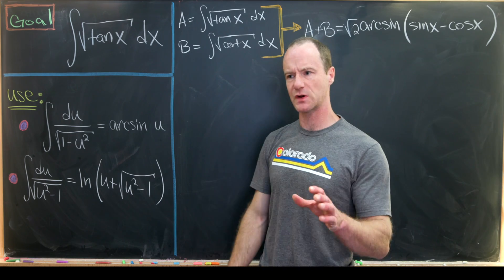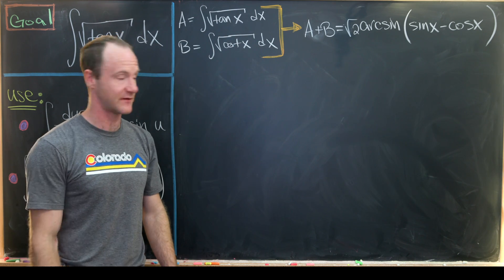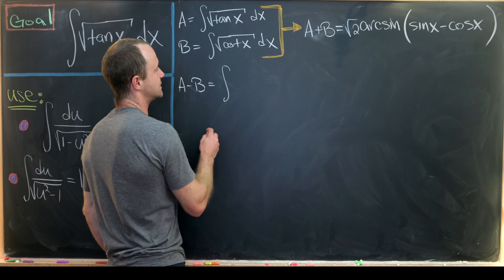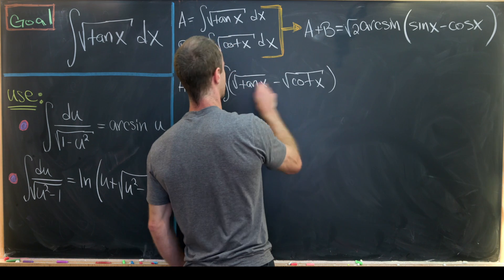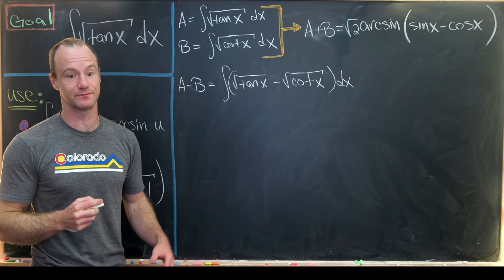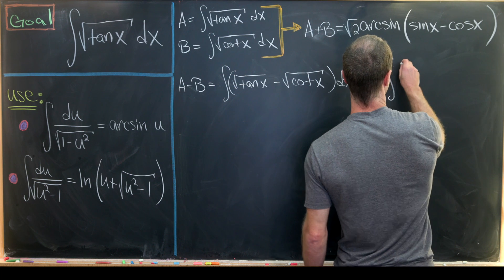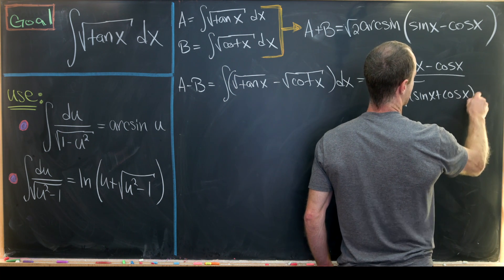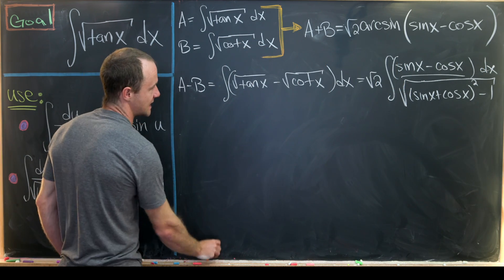So we've established that A + B = √2 · arcsin(sin x - cos x). Now let's compute A - B in parallel. That's the antiderivative of √(tan x) - √(cot x). Going through the same common denominator process, we arrive at: A - B = √2 ∫ (sin x - cos x) / √((sin x + cos x)² - 1) dx.